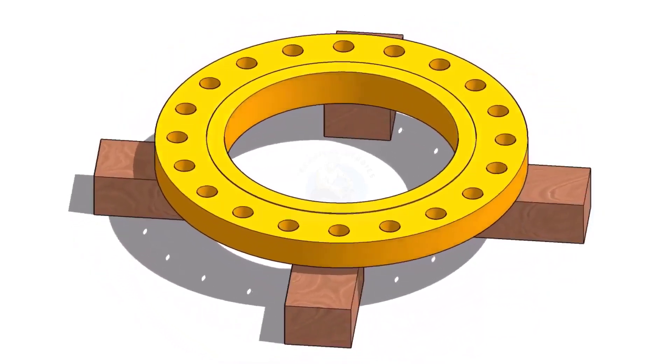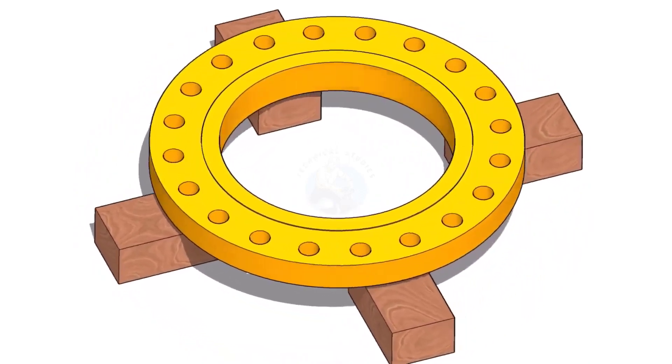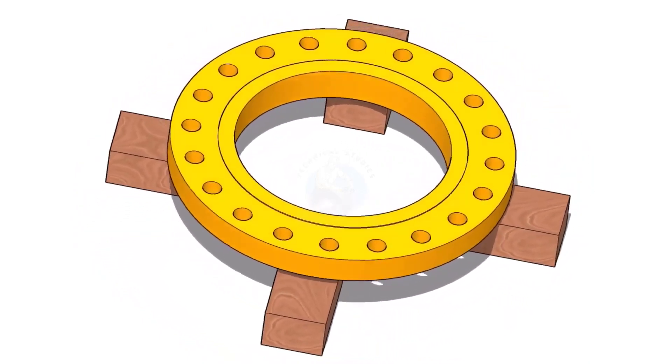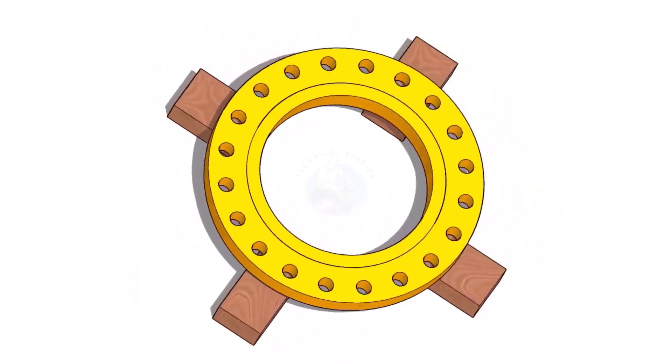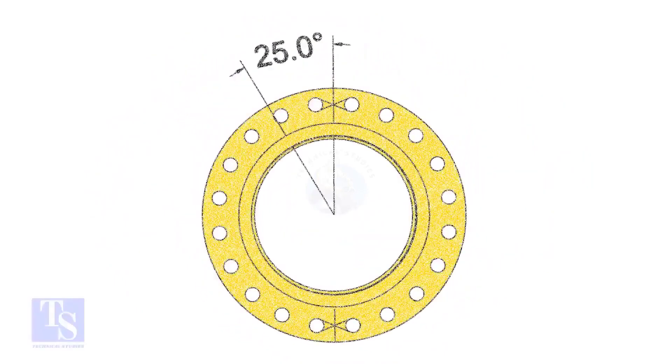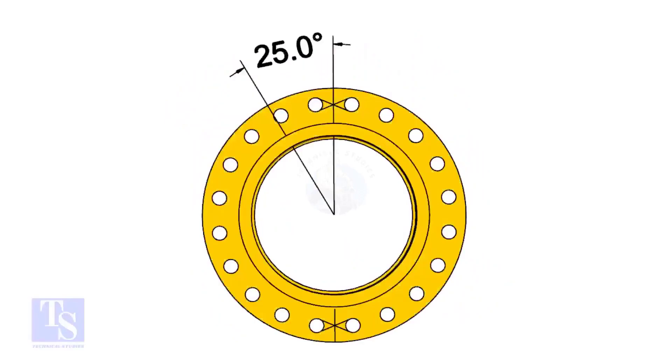I choose a slip-on flange for the example, but the calculation and the procedure are same for all flanges. The pipe and the flange size is 16 inch, and the flange will rotate 25 degree anticlockwise.